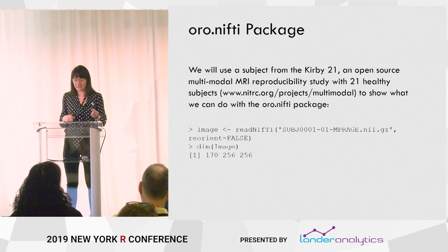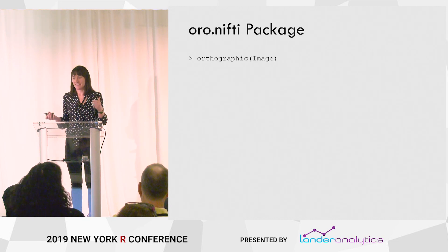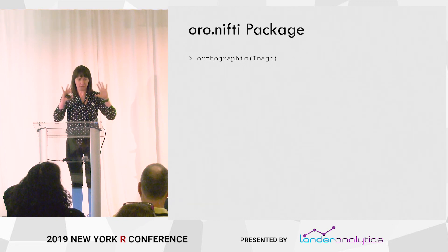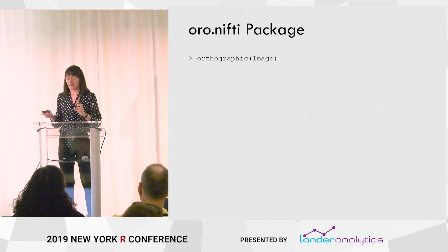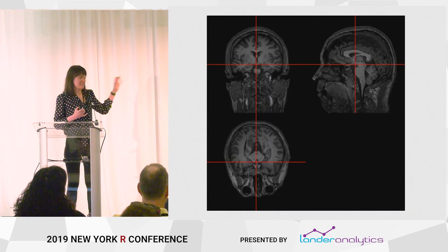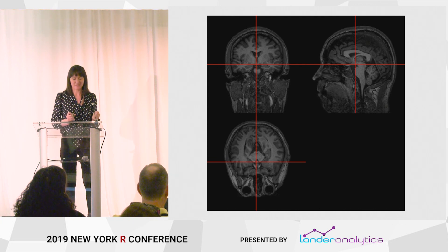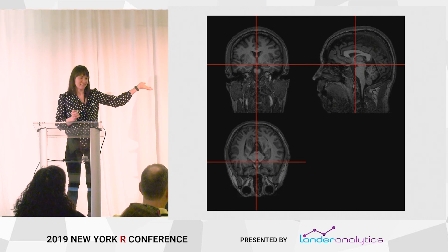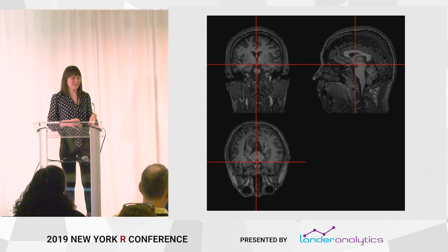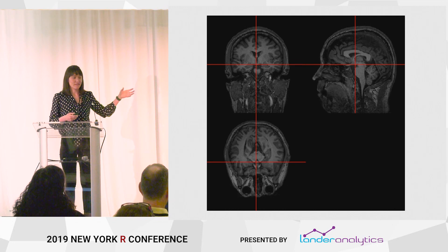If I look at the dimension of that image, it's 170 by 256 by 256 — a three-dimensional array. The main thing I'm always interested in is cool pictures, so I want to visualize this data. oro.nifti has this really nice orthographic function. If I type orthographic image, I get an axial slice, a sagittal, and a coronal slice of the brain — giving us the idea of what's going on three-dimensionally. I can actually publish these; this picture looks good enough for a journal, and it just came out of one function from R.